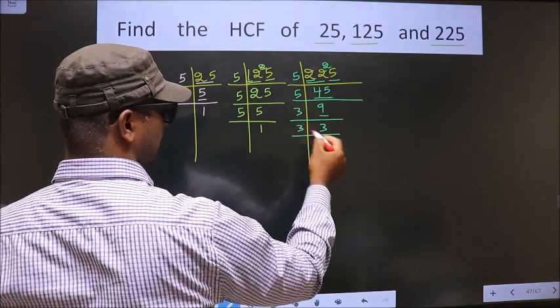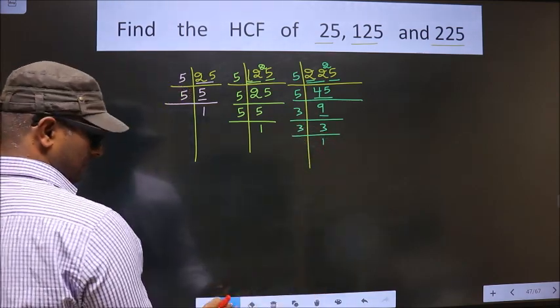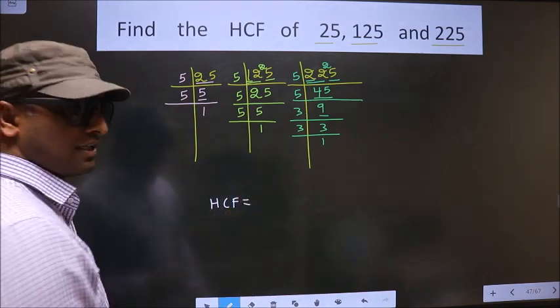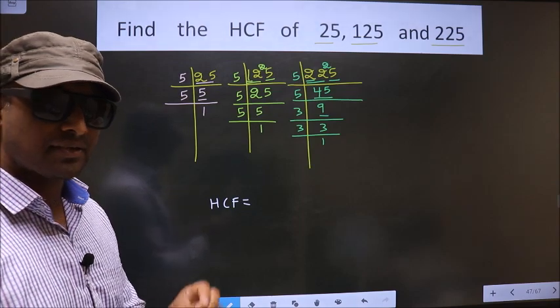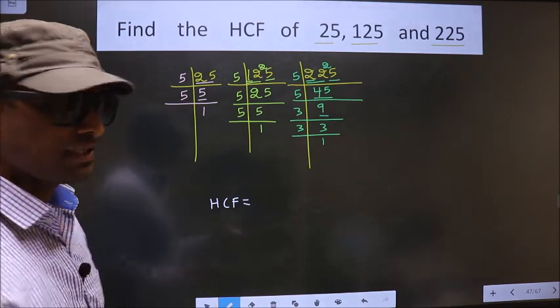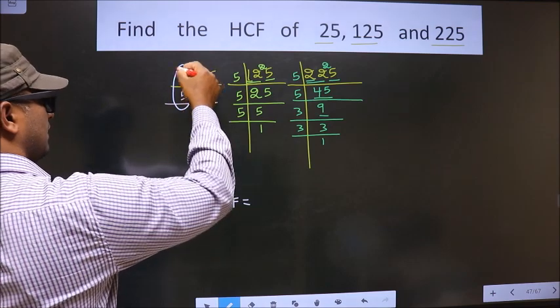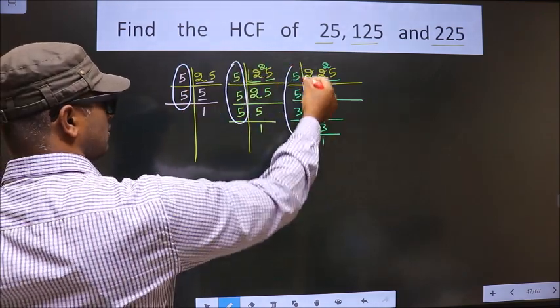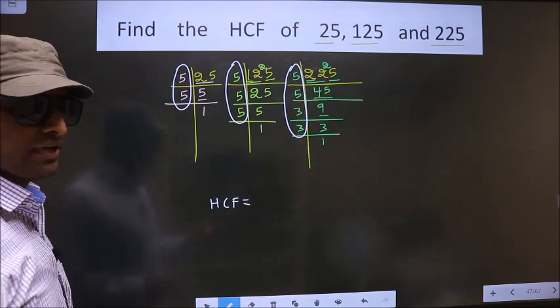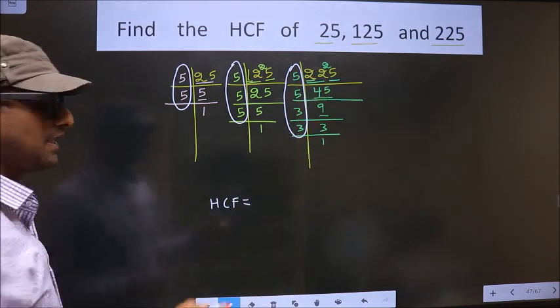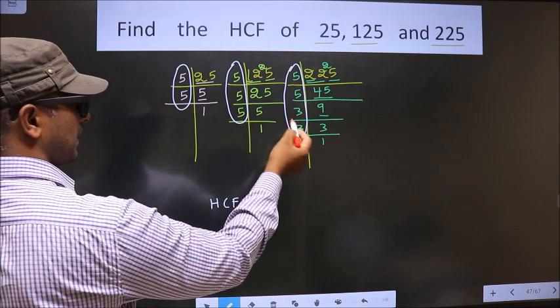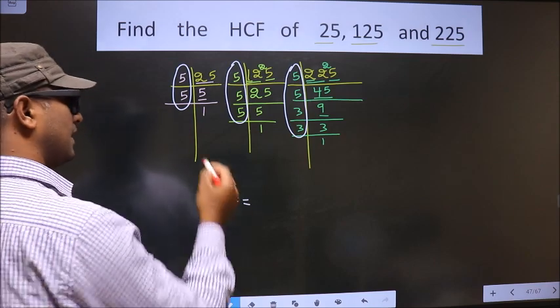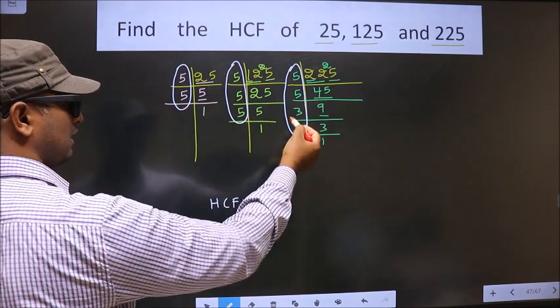Now 3 is a prime number so we take 3 once 3. So now our HCF is the product of numbers that are present here and here and also here. So now we should find the numbers that are present in these 3 places. I repeat, we should find the numbers that are present here and here and also here.